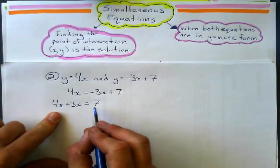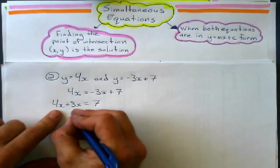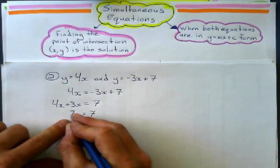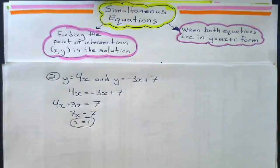Collect like terms here. 4x plus 3x. What does that give me? That gives me 7x equals 7. Now, x equals 7 divided by the coefficient, which is 1.